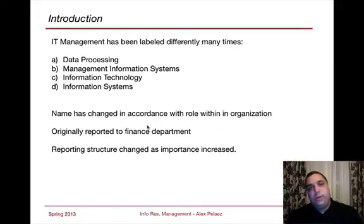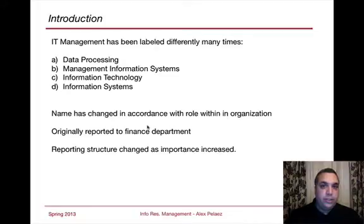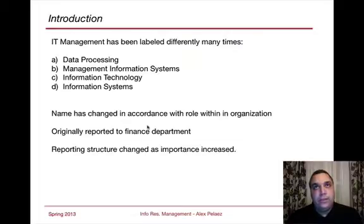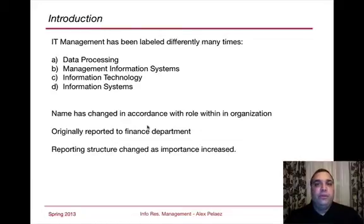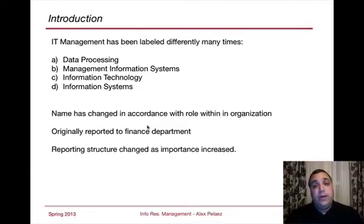IT originally reported to the finance department. In the 1960s, you basically had systems designed for budgets and spreadsheet-type applications, calculations, or reporting. In the 1970s, you saw the emergence of some healthcare systems, but those systems weren't clinical in nature — they were more designed for billing and claims adjudication. The reporting structure has changed as IT has needed a role at the table, and you see the CIO gaining the same seat as the chief marketing officer or the chief financial officer. In some cases, the CIO is the second or third most important person in the organization.